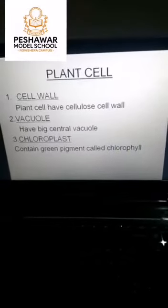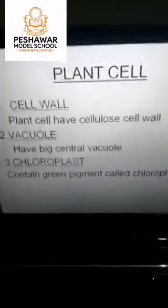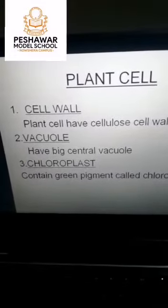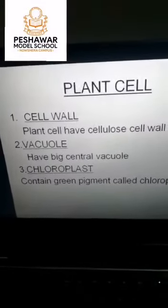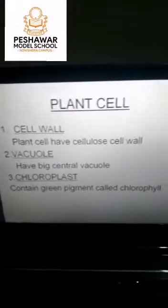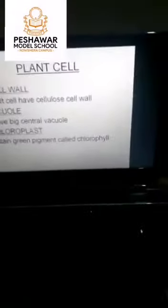The third and important organelle present in plant cells is the chloroplast. Chloroplast contains a green pigment called chlorophyll, and chlorophyll helps in the process of photosynthesis. Photosynthesis is a process in which plants make their own food.